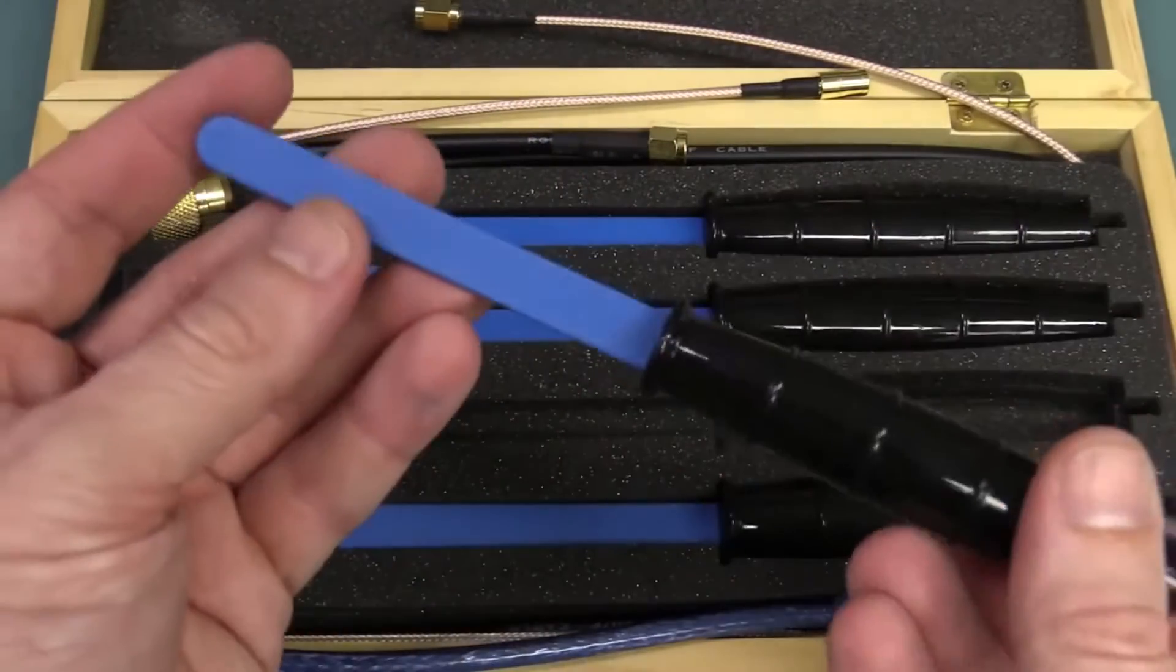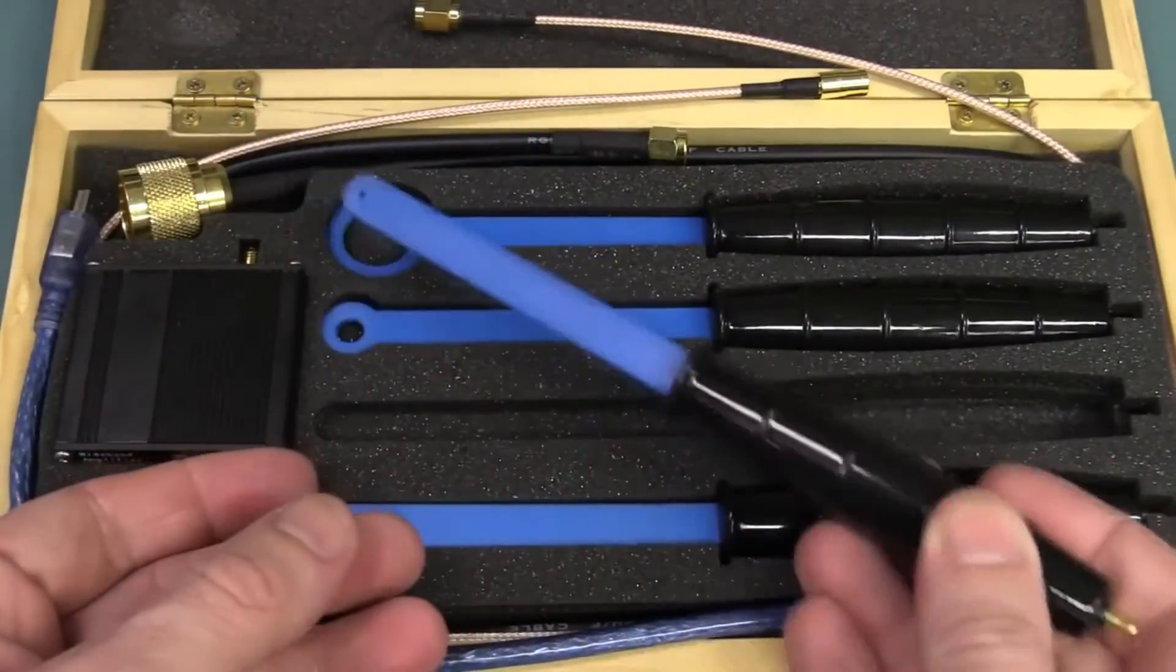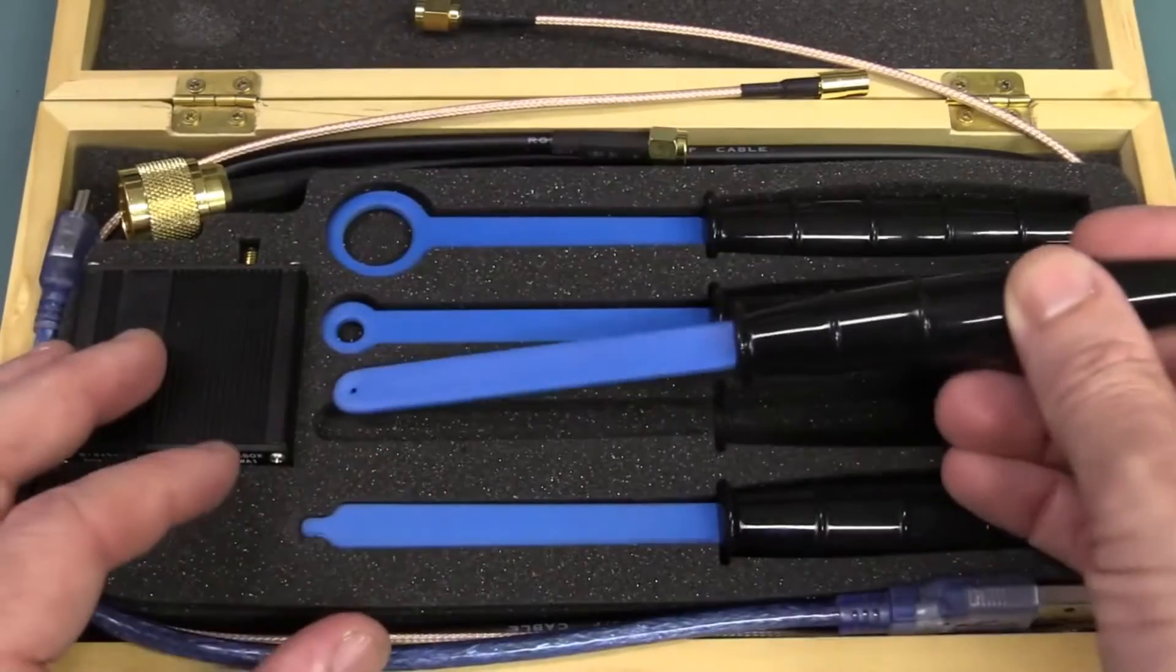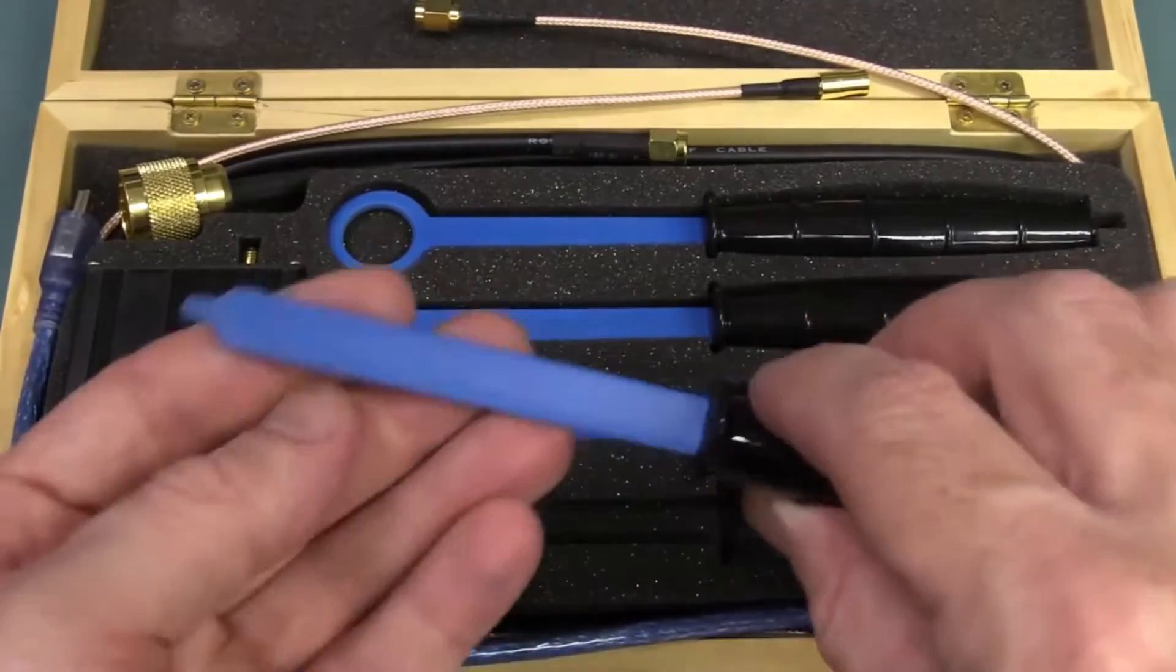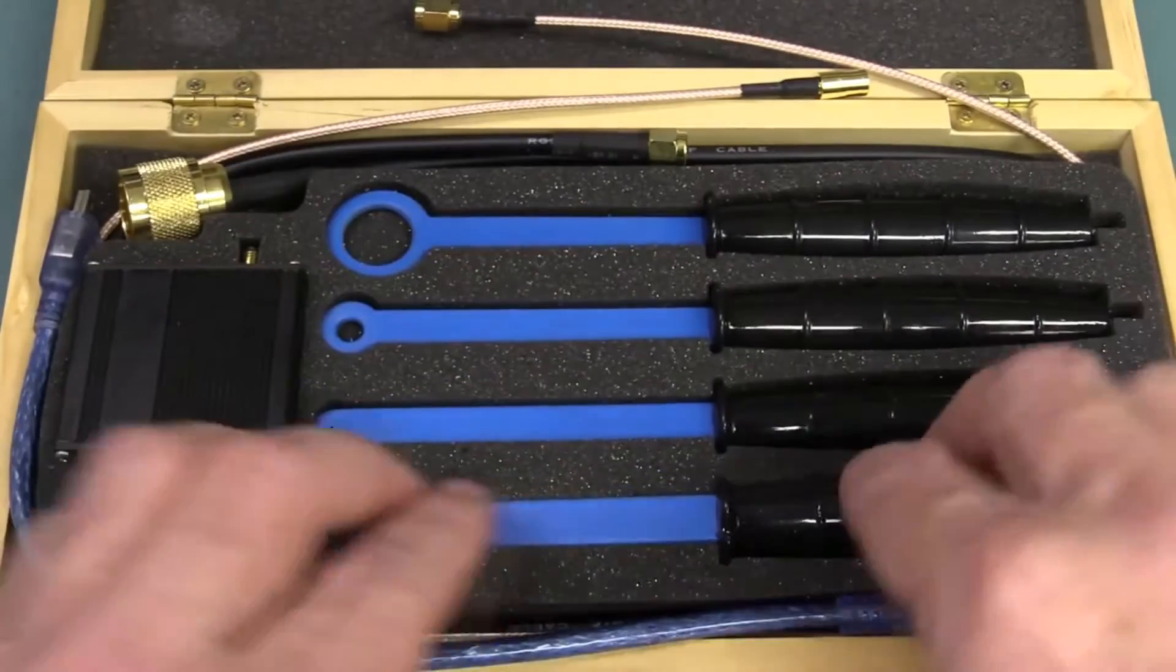For the magnetic H-field, you can pinpoint more easily exactly where your issue is with the smaller ones. So that's why you get a couple of those, whereas you don't need that with the E-field. Just the one will do the trick.